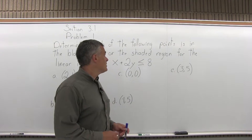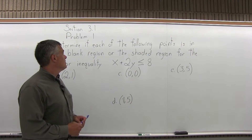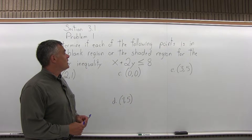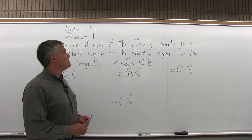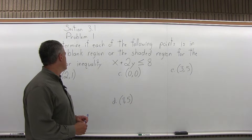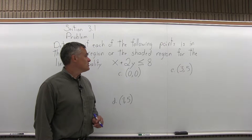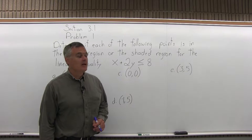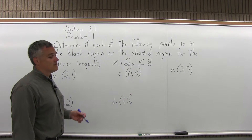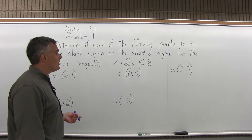This is problem number 1 from Section 3.1. It says determine if each of the following points is in the blank region or the shaded region of the linear inequality x plus 2y is less than or equal to 8. For each point you want to say shaded or blank.